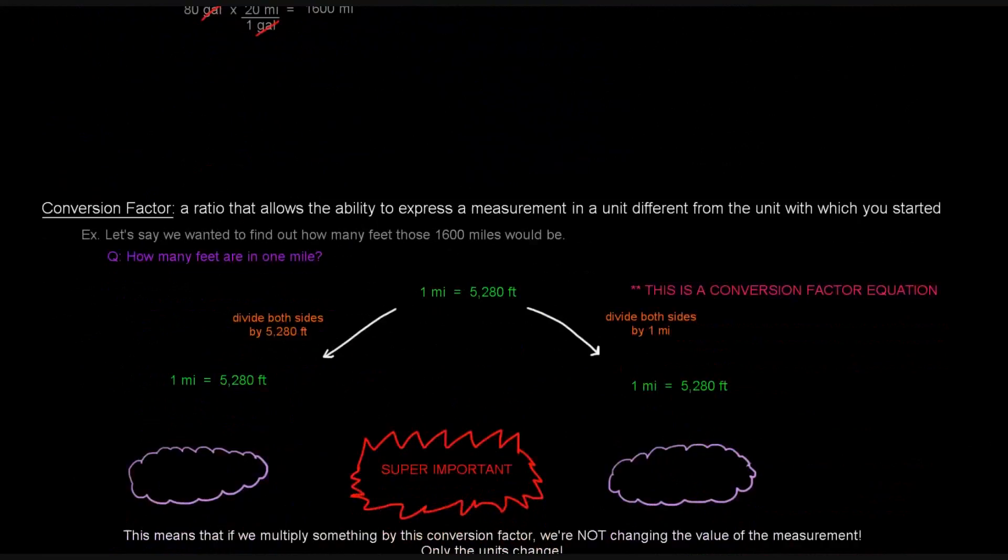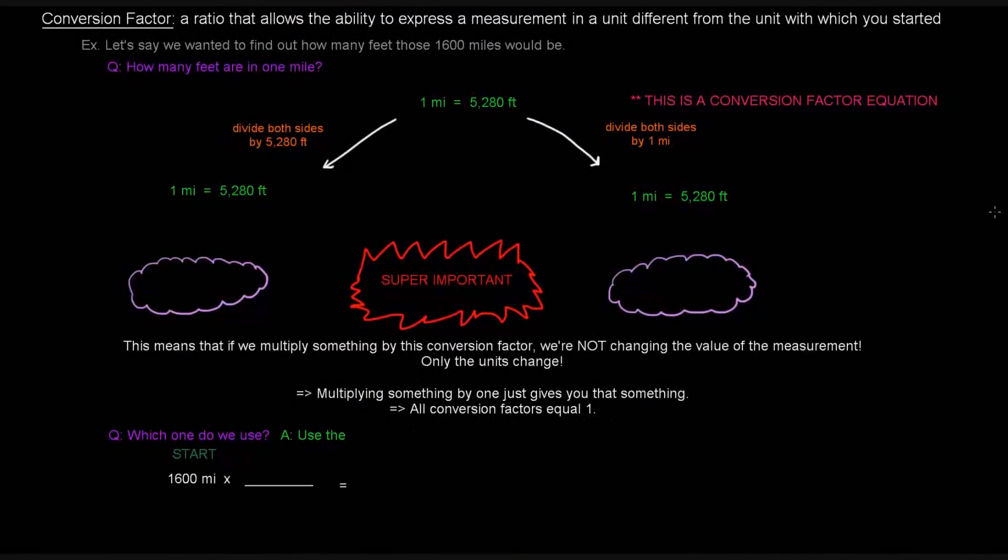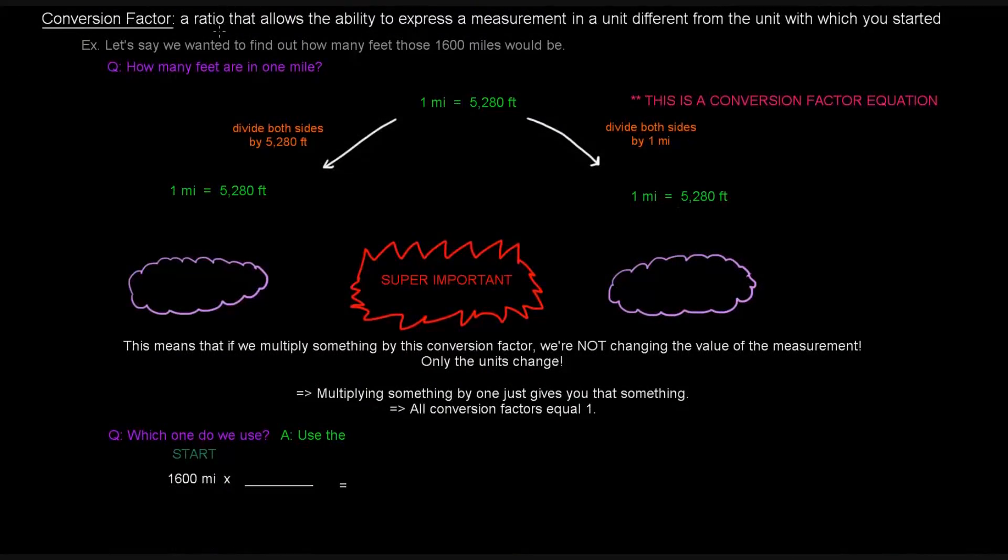So the next idea is a conversion factor. This is a very important idea. A conversion factor is a ratio that allows the ability to express a measurement in a unit different from the unit with which you started. Basically, it allows you to convert one unit to another.